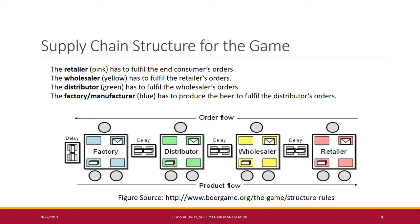Let us now discuss the supply chain structure for the game. There is a picture showing the different parts of the supply chain: one retailer, one wholesaler, one distributor, and the manufacturer. It also shows the direction of order flow and product flow. Orders go from the retailer to the wholesaler, the wholesaler to the distributor, and the distributor to the factory. Products are then transported from factory to distributor, distributor to wholesaler, wholesaler to retailer, and finally to the end consumer.